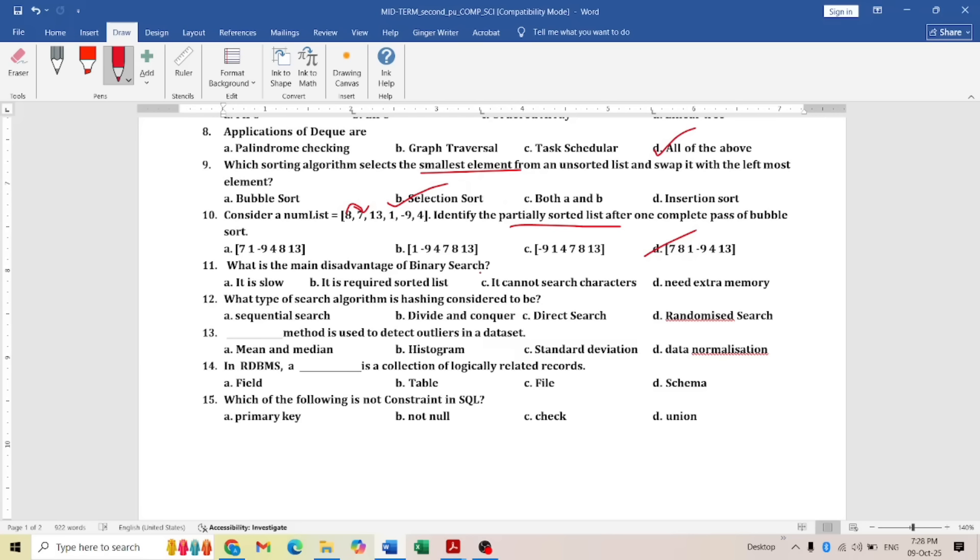Next: what is the main disadvantage of binary search? It does require a sorted list—that is very important. And it is very fast also. So it requires a sorted list. Next question: what type of search algorithm is hashing considered to be? Hashing is considered to be direct search. Sequential search is linear search; divide and conquer is binary search. Next question: dash method used to detect outliers in the data set. The meaning of outliers is nothing but deviation. So standard deviation is the answer.